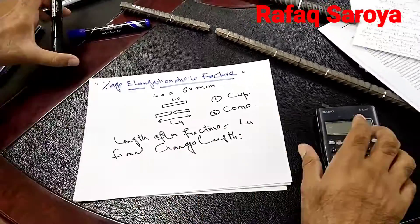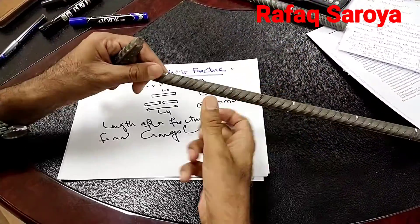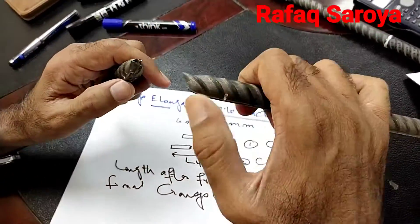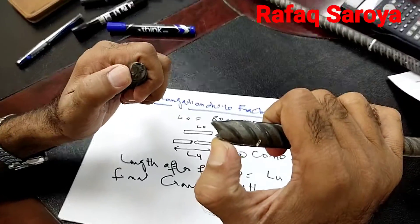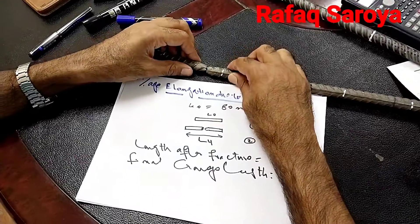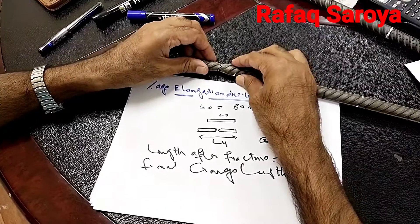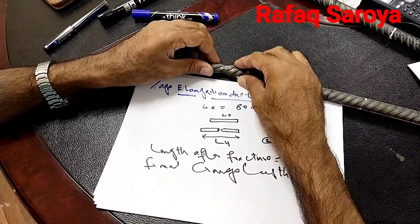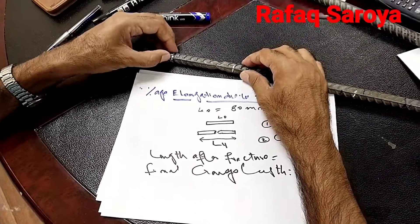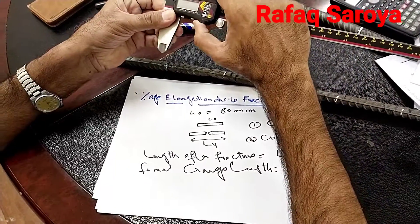The piece which is broken by the machine during the testing phase is with me. This portion is like a cup and cone — one is a depression and the other one is on this side. Let me make the connection of these two pieces with each other. As these two pieces are connected, here I will try to find out the value of this length.